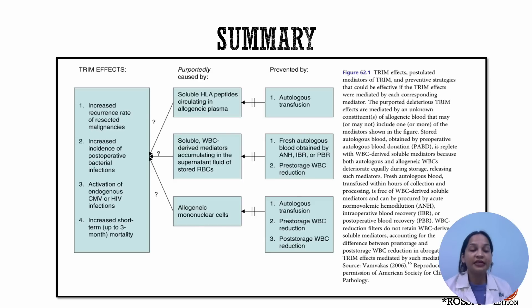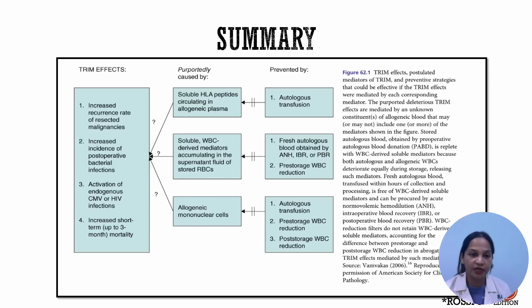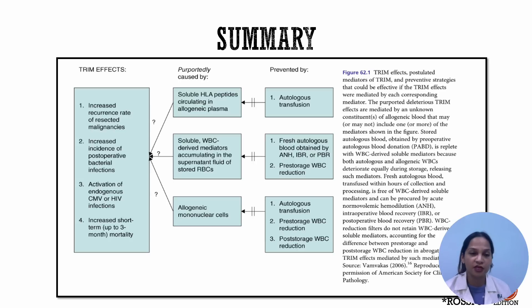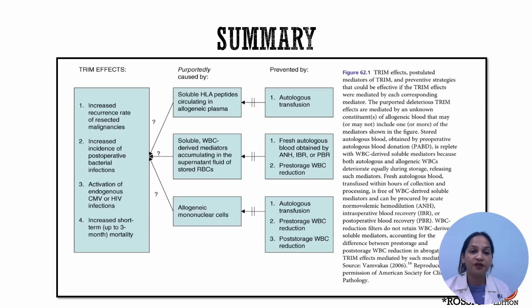In summary, the deleterious TRIM effects reported are increased recurrence rate of resected malignancies, increased incidence of post-operative bacterial infections, activation of endogenous CMV or HIV infections, and increased short-term mortality. These may be caused by soluble HLA peptides circulating in allogeneic plasma, soluble WBC-derived mediators in the supernatant fluid of red cells, or allogeneic mononuclear cells or WBCs. These effects can be prevented by autologous transfusion or by pre-storage WBC reduction or leukoreduction.